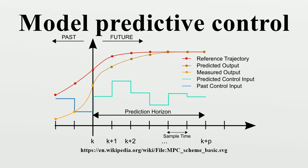At time t, the current plant state is sampled and a cost-minimizing control strategy is computed for a relatively short time horizon in the future.